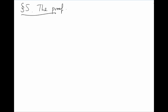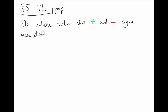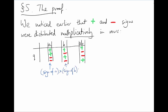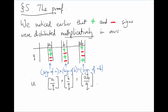The proof. Firstly, a remark about Legendre symbols. We noticed earlier that the plus and minus signs were distributed multiplicatively in rows. The sign of a times the sign of b is the sign of ab, and we can write this using Legendre symbols: [a/q] times [b/q] equals [ab/q]. Legendre symbols are multiplicative in the top argument. Also, the top number a in the symbol [a/q] is always being considered mod q — we can always replace it by anything else that's equal to a mod q.